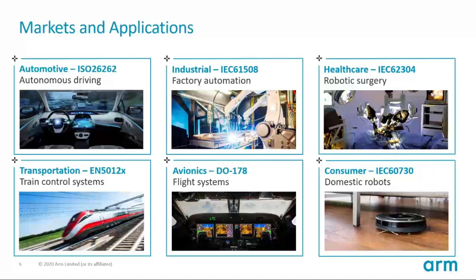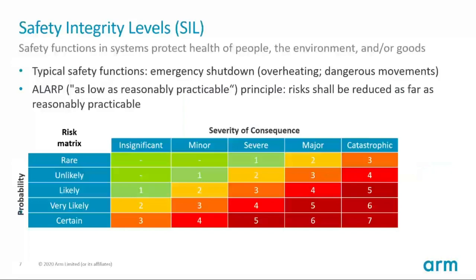Safety is about reliable operation. Systems should detect failures and in case of failures, operate in a safe mode. A safe mode could be as simple as switching off the device, but sometimes it would require running a motor at full speed. Therefore, these safety standards categorize safety requirements to the end system using safety integrity levels.